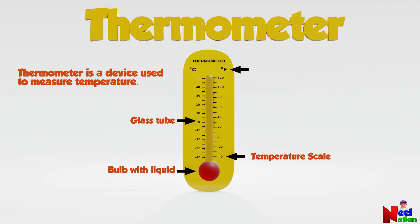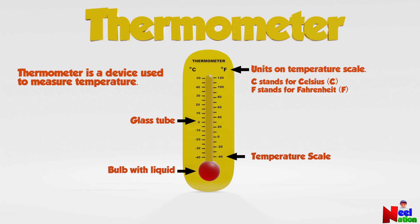There are two types of units on a temperature scale: C and F. C stands for Celsius, F stands for Fahrenheit. Temperature is measured in degrees. The unit Fahrenheit is used in the United States and Celsius is used in most of the other countries.